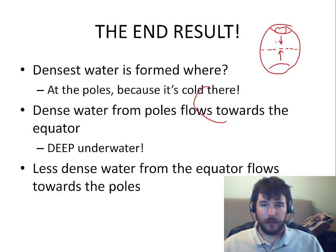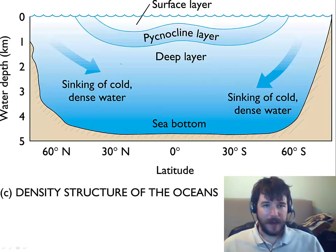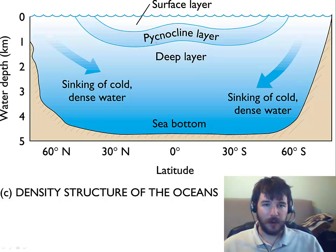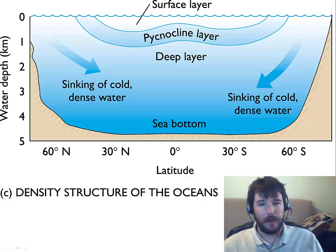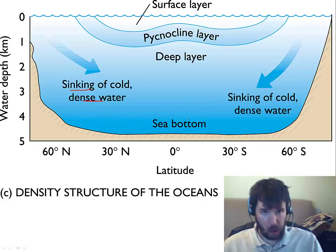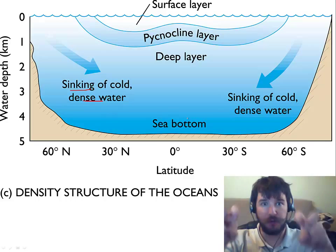As a result, the less dense water is going to flow along the surface from the equator back up to the poles to complete that cycle. The water of the ocean can be divided into basically three density layers: the surface layer up top, the pycnocline layer which is sort of the equilibrium area in the middle, and the deep layer — where you've got that sinking water, the dense water going down to the sea bottom.